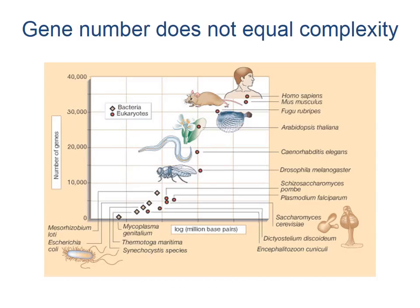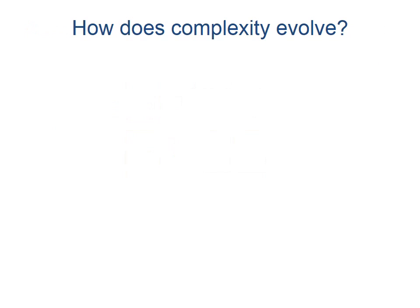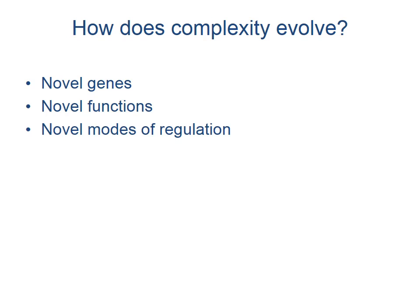The sequencing of more organisms has revealed that animals that appear to be morphologically simple can actually have more genes than humans, and vice versa. How, then, does complexity evolve? The answer may lie in the evolution of new genes with new functions and novel modes of regulation.